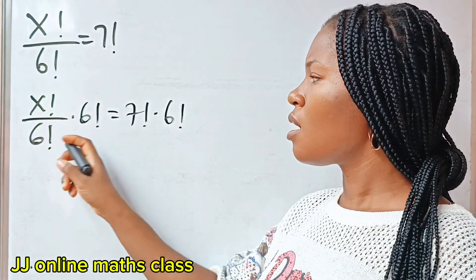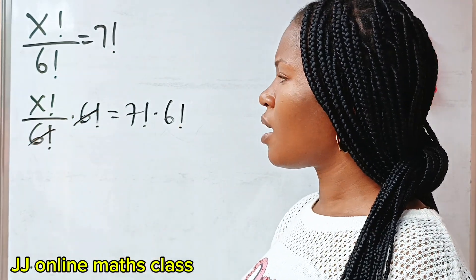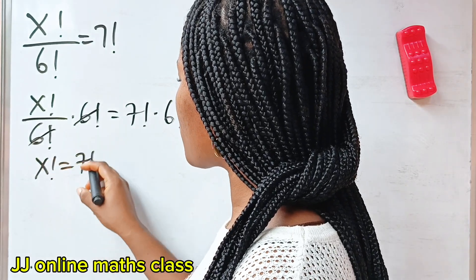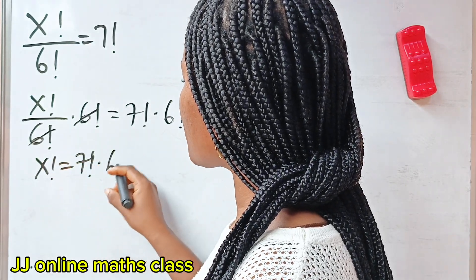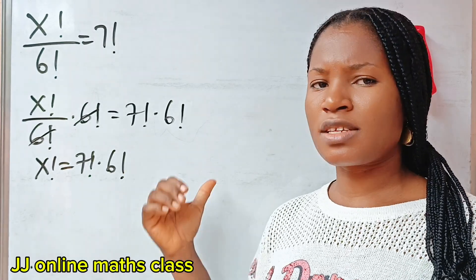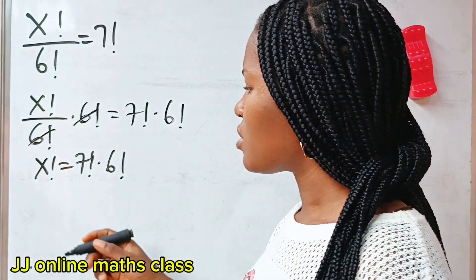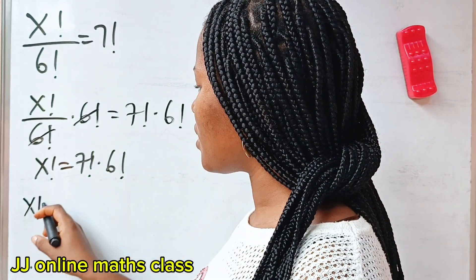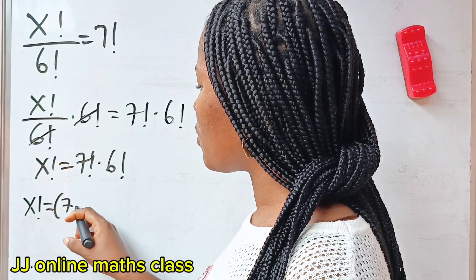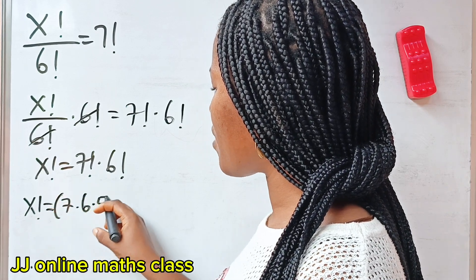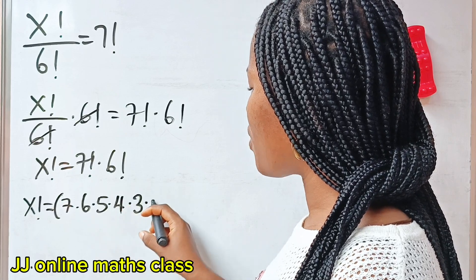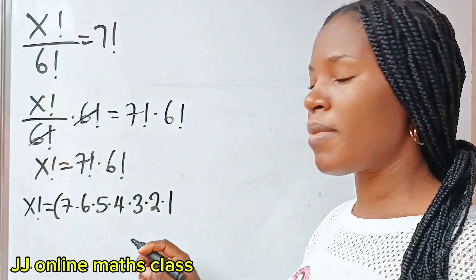Because I want this to cancel each other, and we are left with x factorial is equal to 7 factorial multiplied by 6 factorial. Now, remember the explanation I gave to you earlier? So we have that x factorial is equal to: 7 factorial should be 7 multiplied by 6 multiplied by 5 multiplied by 4 multiplied by 3 multiplied by 2 multiplied by 1.